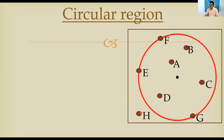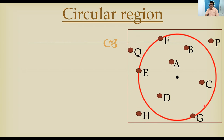H is a point which is not inside and not on the boundary, but outside the circle — it is an exterior point of the circle. Similarly, P and Q are also exterior points. So interior points are A, B, C, D; on the boundary are E, F, G; and exterior points are H, P, Q.